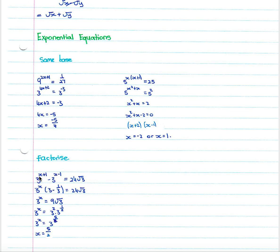When we have pluses and minuses of different terms, we factorize by taking out the common factor three to the x, leaving (three minus one third) equal to the constant. We then isolate three to the x by dividing through, giving nine root three. We recognise that nine root three is three squared times three to the half, and multiplying by adding exponents gives three to the five over two. Comparing exponents, x equals five over two.